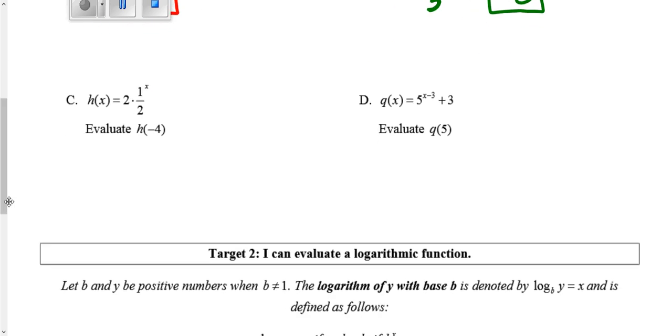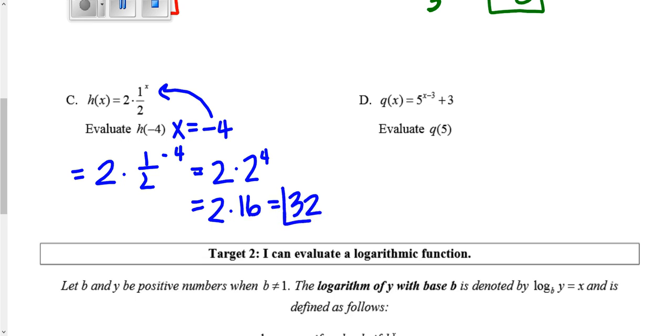On C, we're evaluating h(-4), so x = -4. We have 2 times (1/2)^(-4). I'm doing this without a calculator. When you have (1/2)^(-4), you take the reciprocal and make the exponent positive, so this becomes 2 times 2^4. 2^4 is 16, so 2 times 16 is 32. Again, you can use your calculator if you prefer.